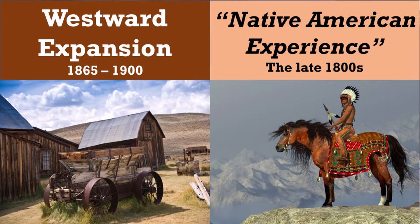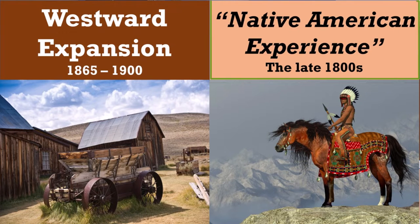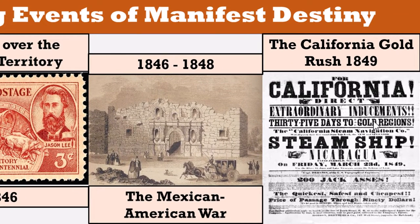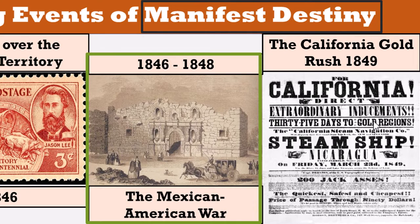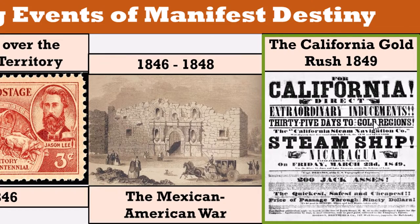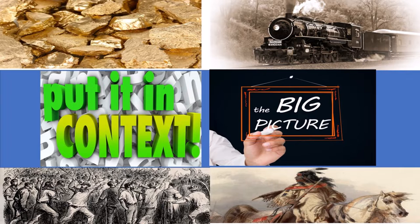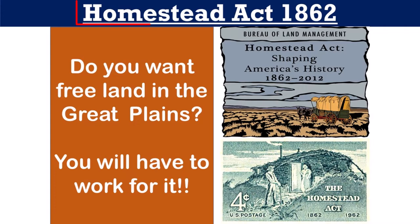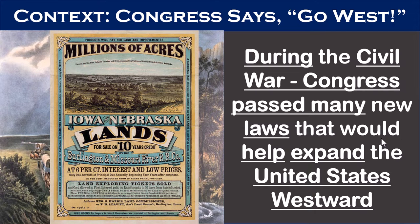Today we're going to do part one of Western Expansion from 1865 to about 1900, and the Native American Experience. For those of you who completed our early U.S. History course, we covered Manifest Destiny events like the Mexican-American War, the California Gold Rush starting in 1849, and all of these provide context — context is what led up to that event — for the second wave of migration following the Civil War.